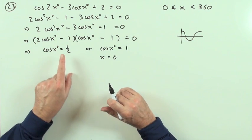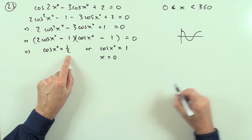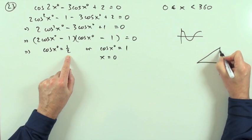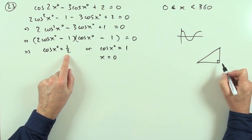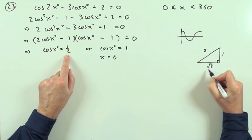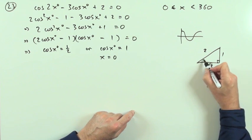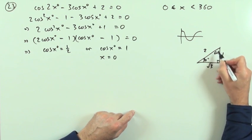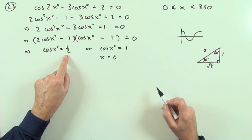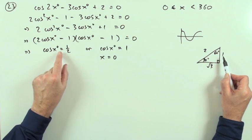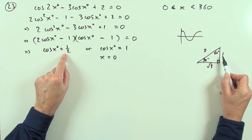It also equals 1 at 360, but 360 is not included—it just says less than 360. This part here, a half: we'll just think of your triangles. The half comes from the 1, 2, root 3 triangle, which came from the 30-60 triangle.